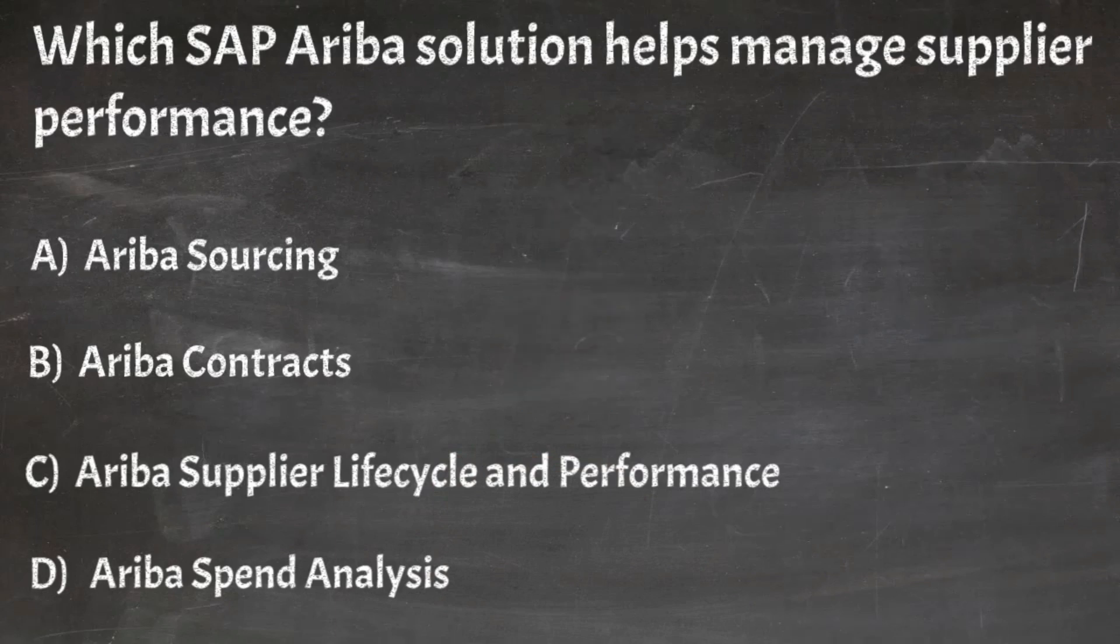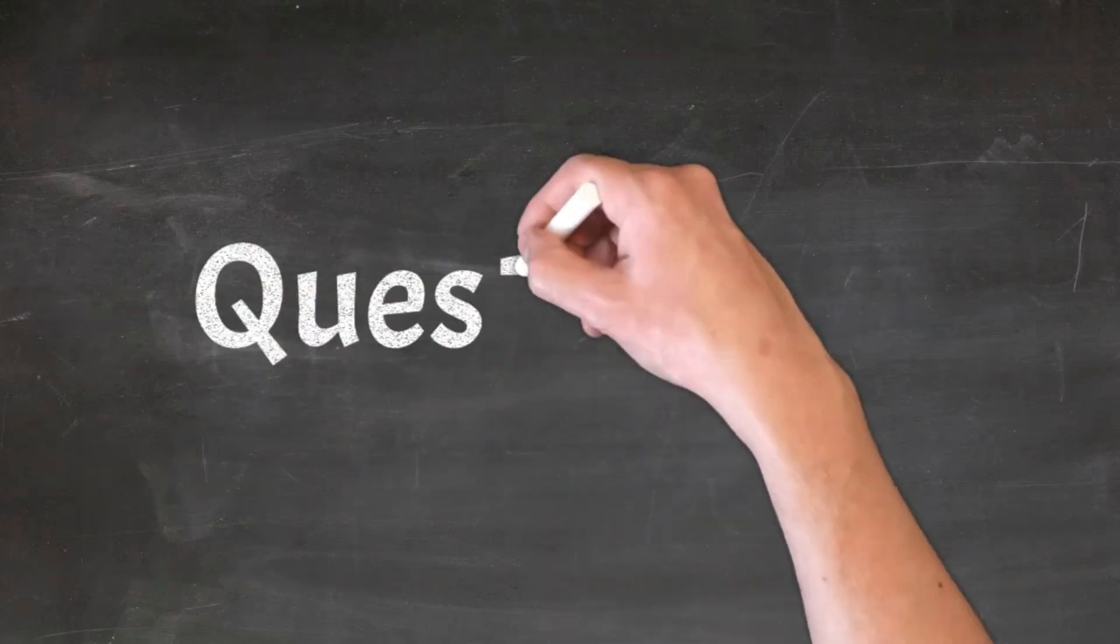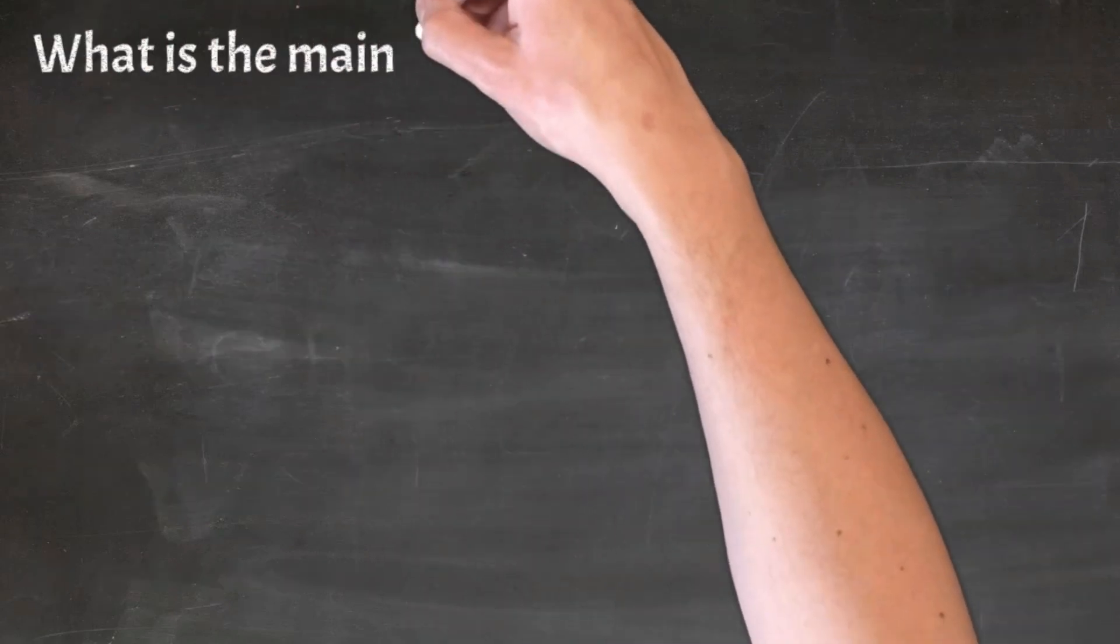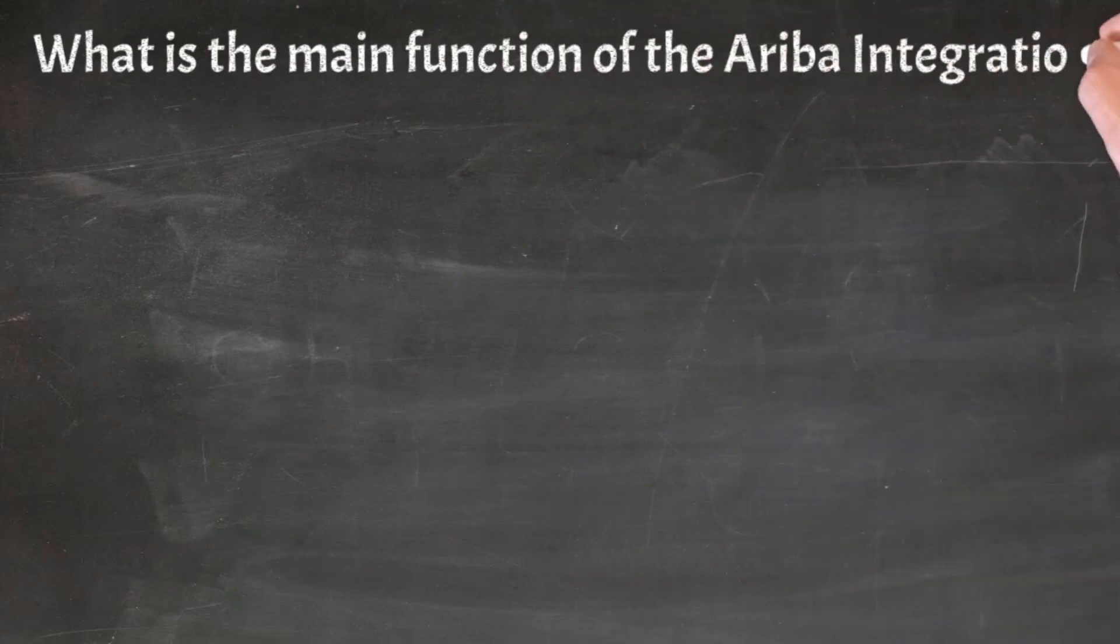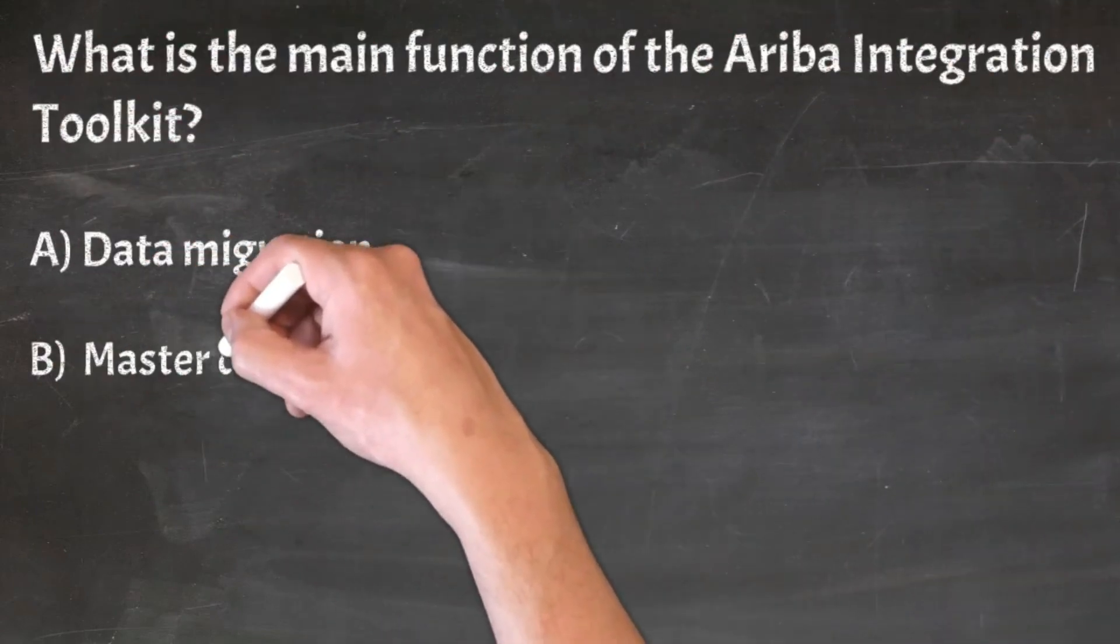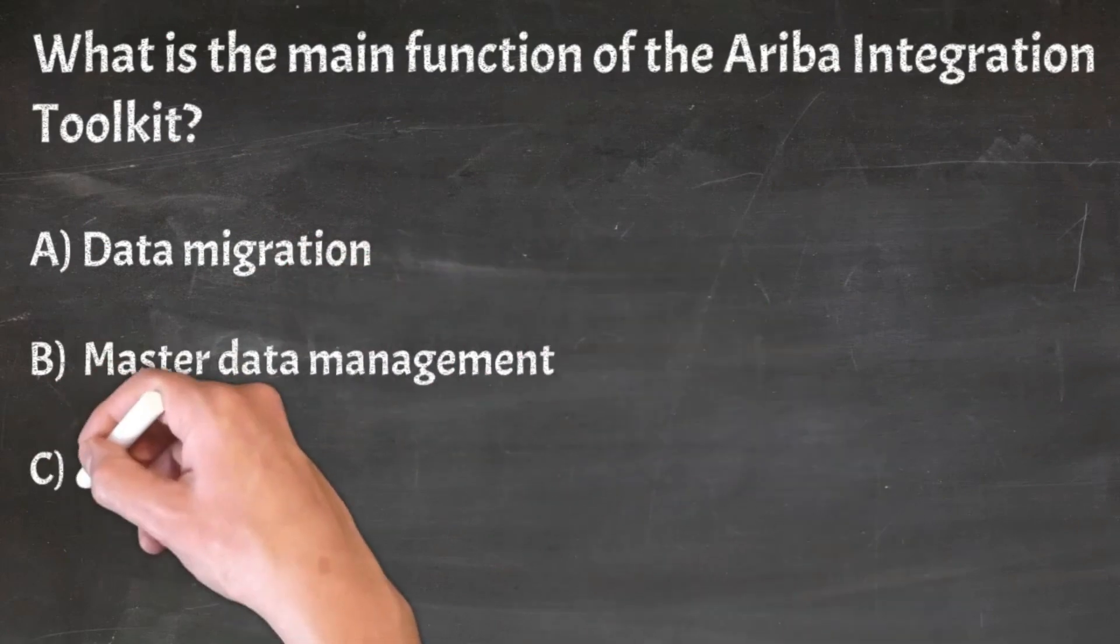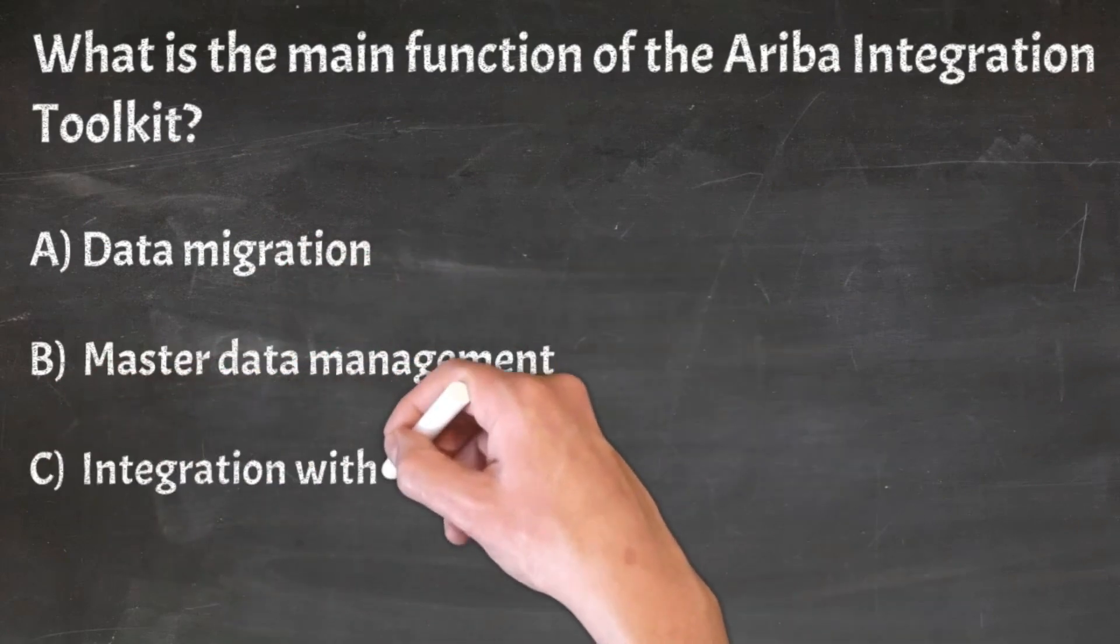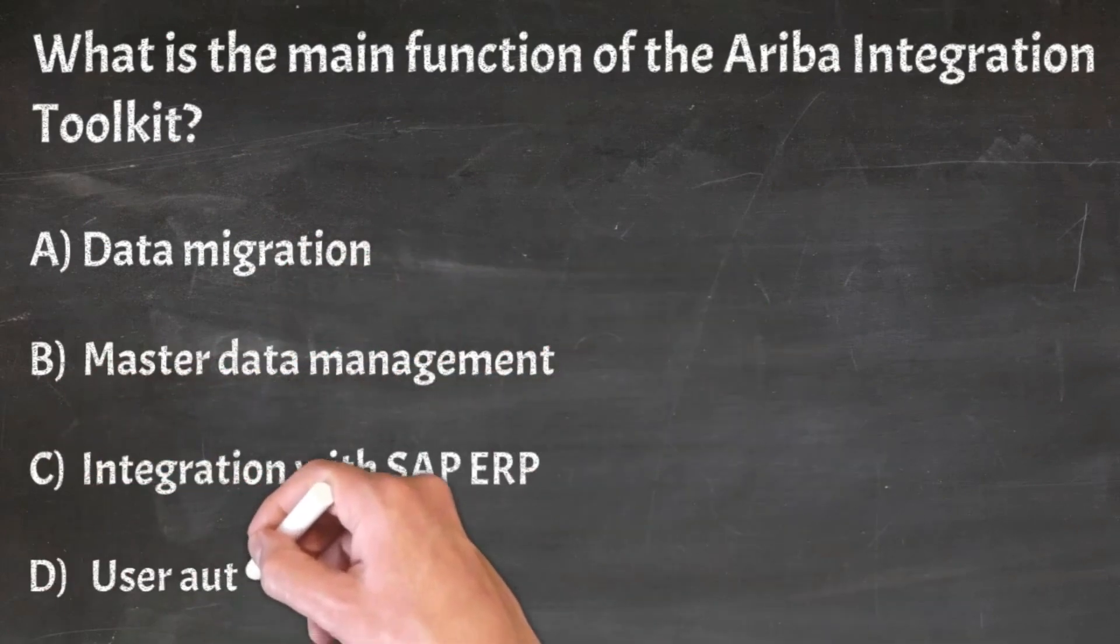Correct answer: C. Ariba supplier lifecycle and performance. Question 24: What is the main function of the Ariba integration toolkit? A. Data migration, B. Master data management, C. Integration with SAP ERP, D. User authentication.